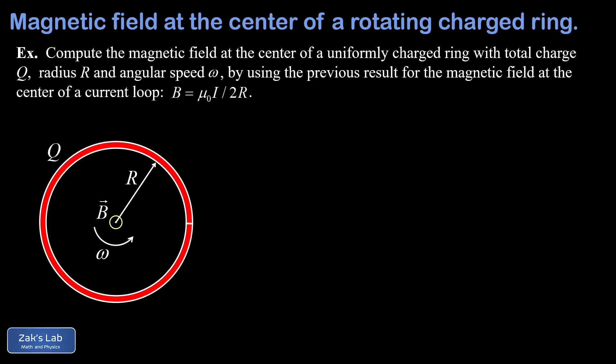The point of this problem is to exploit a previous solution in which we found the magnetic field at the center of a current loop using the Biot-Savart law. The conclusion was that the magnetic field at the center of a current loop has a magnitude of mu-naught I over 2R. We can also see the direction of that field in the diagram, with B pointing out of the page corresponding to the counterclockwise rotation of the positive charge on this ring.